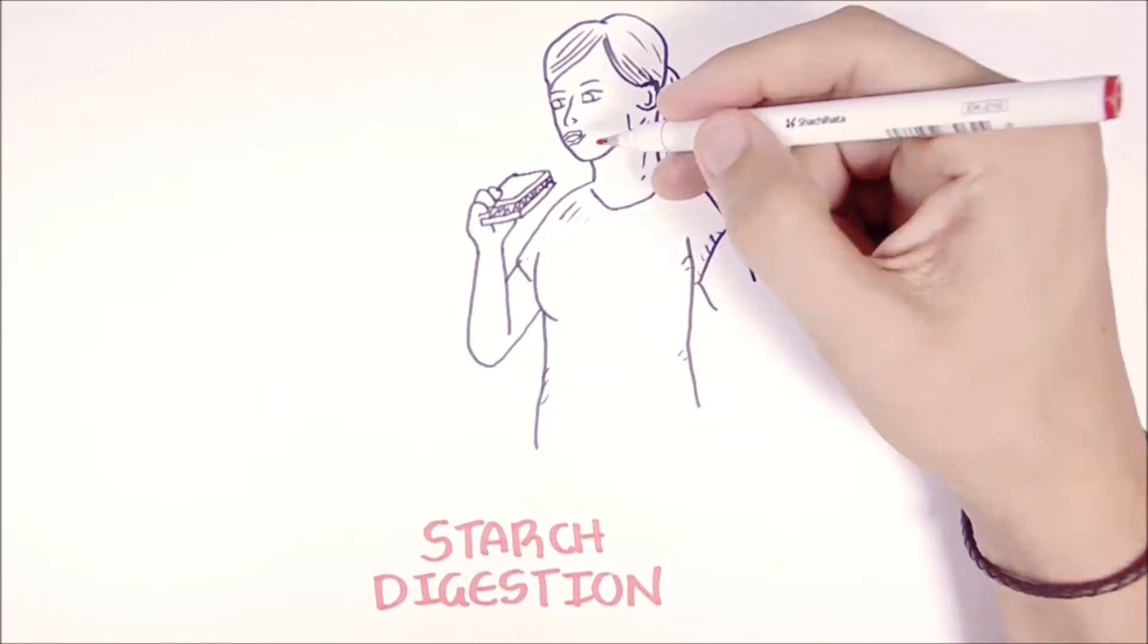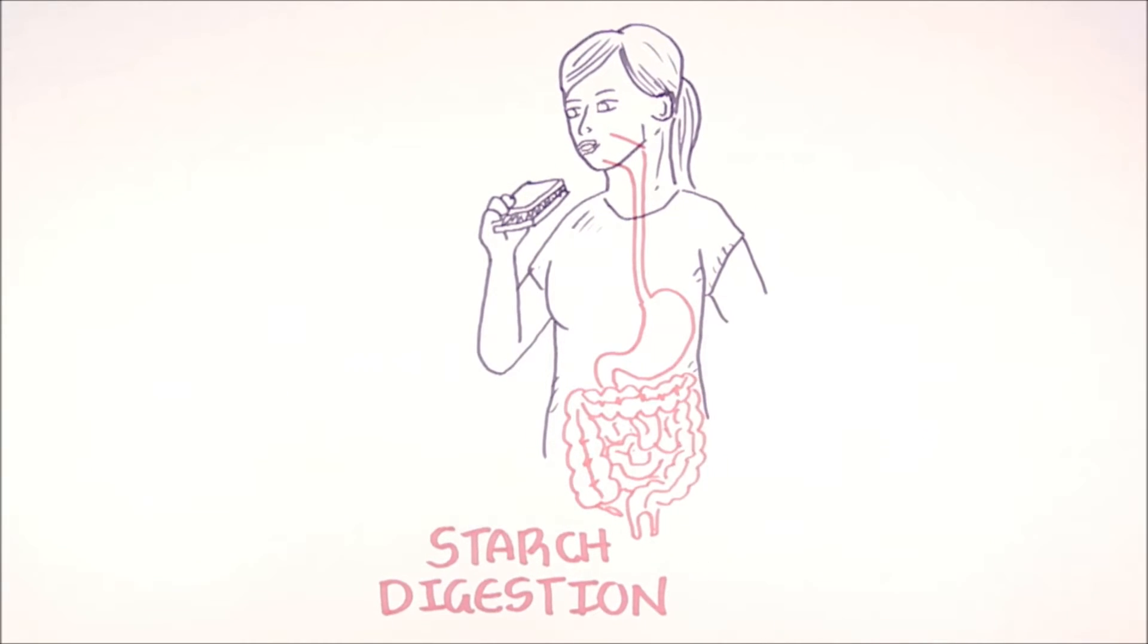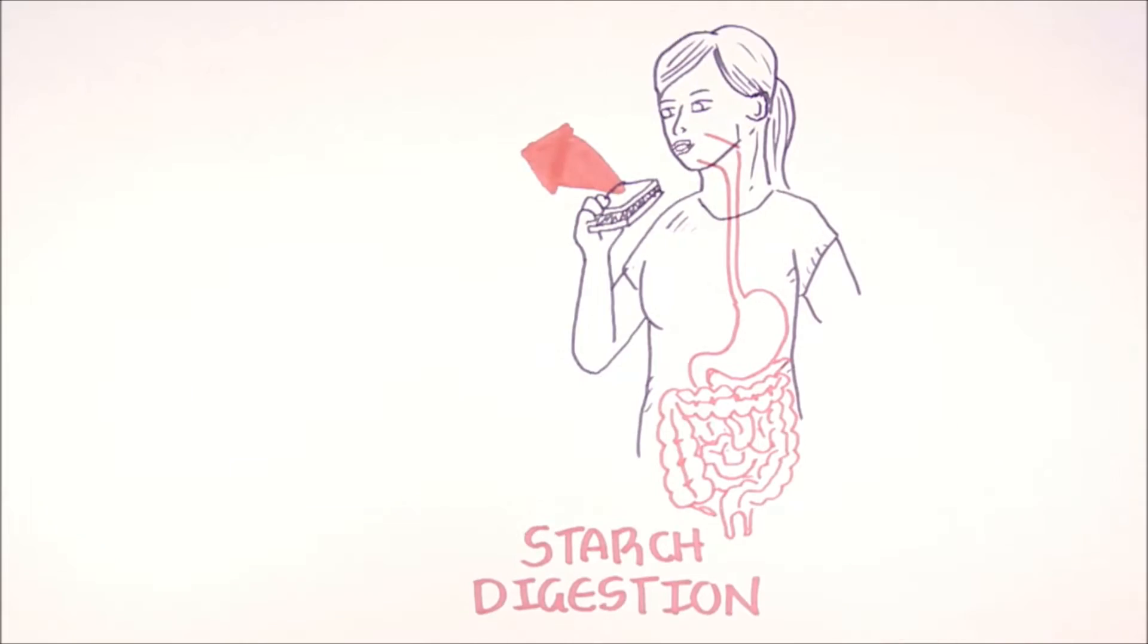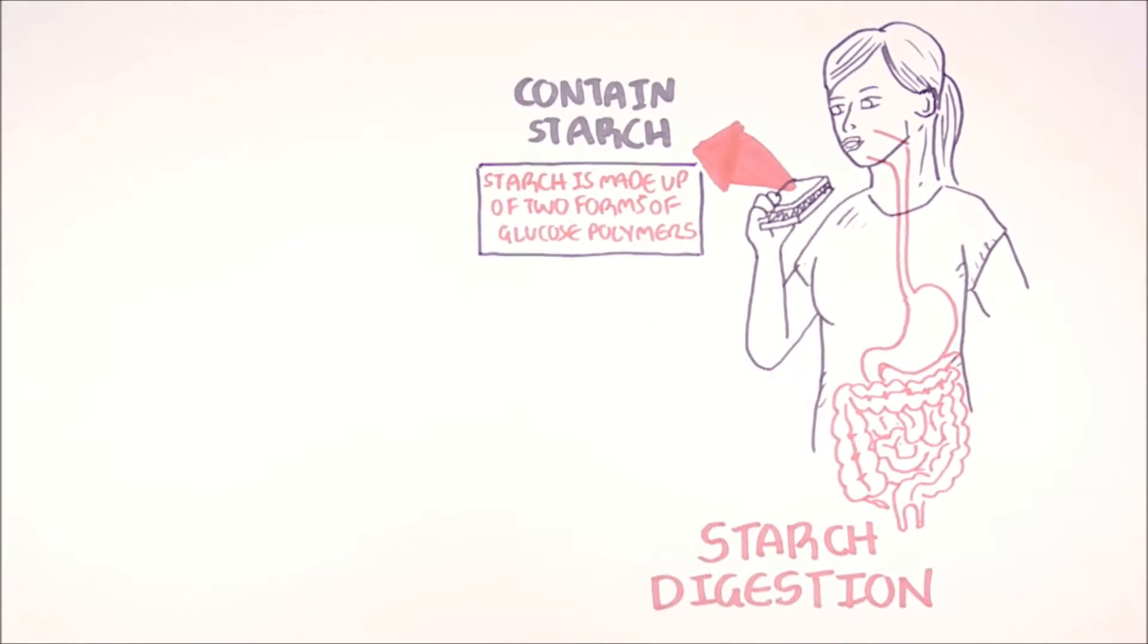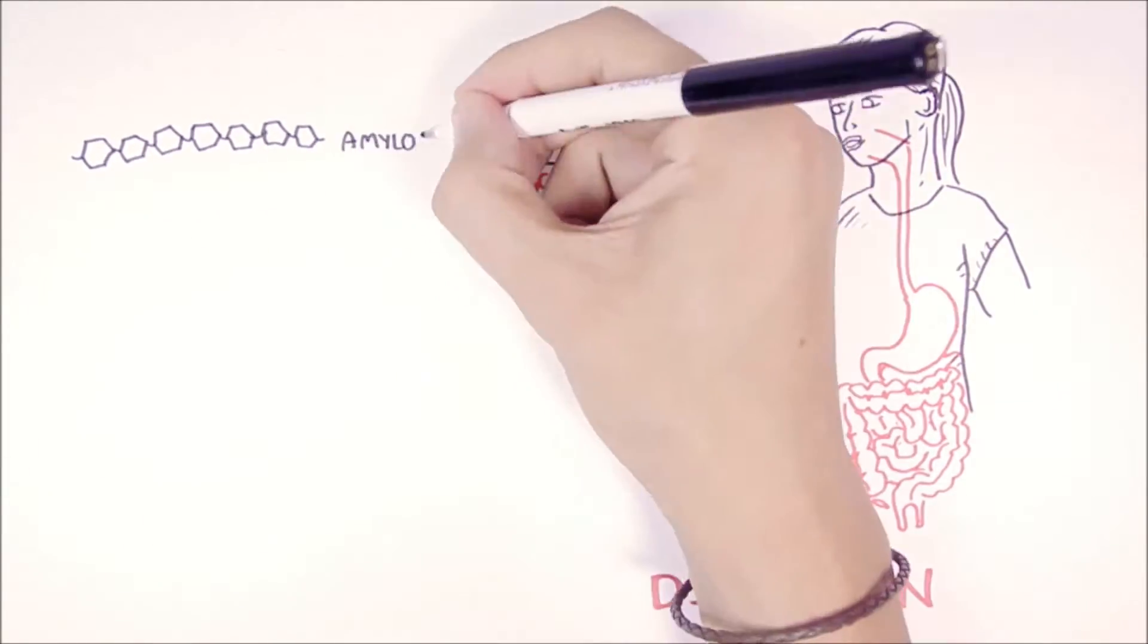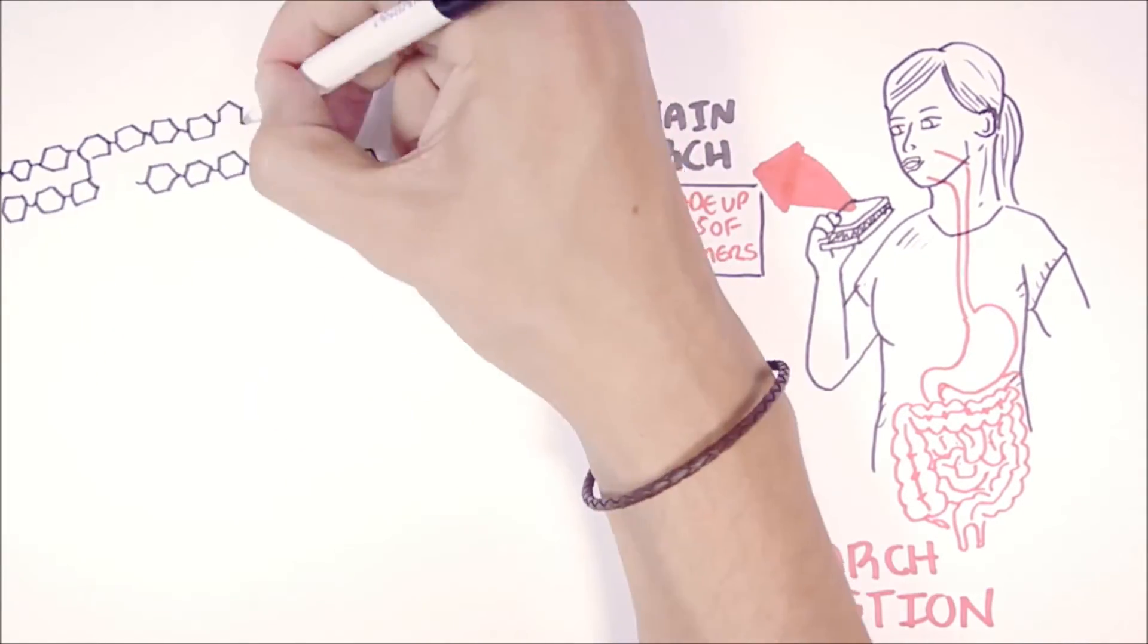So we begin here with a human eating a sandwich. The bread contains starch. Starch is made up of two forms of glucose polymers.